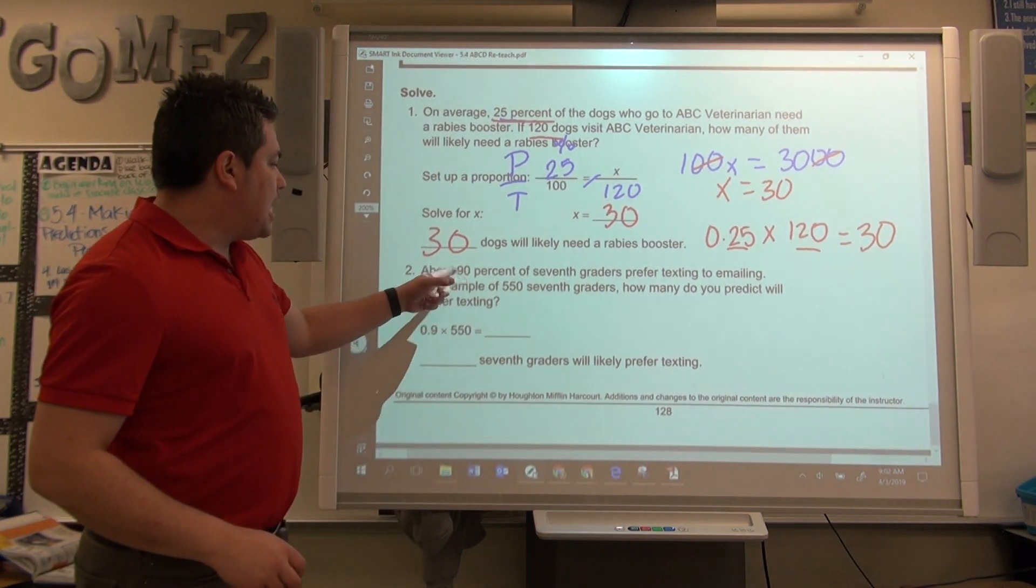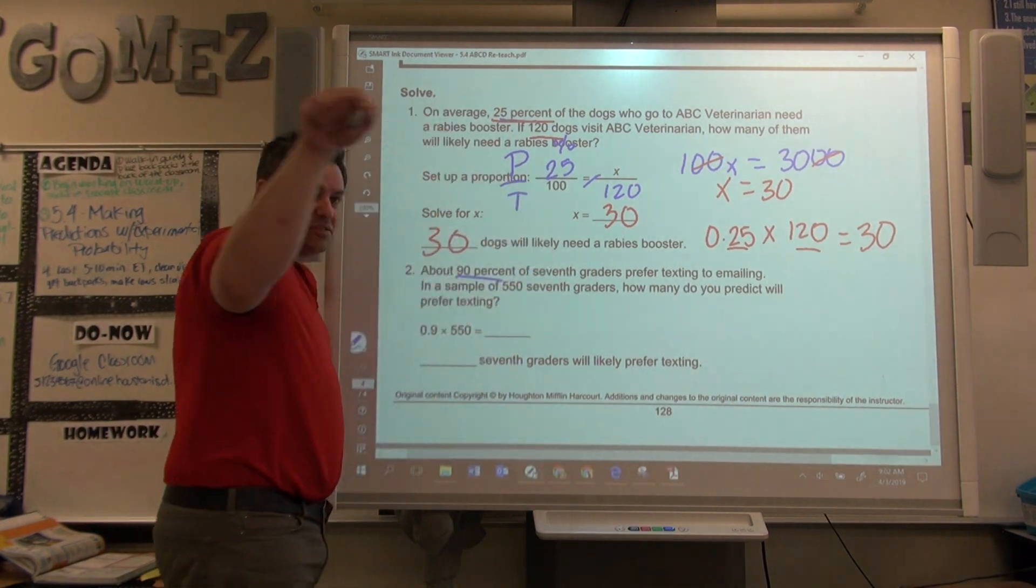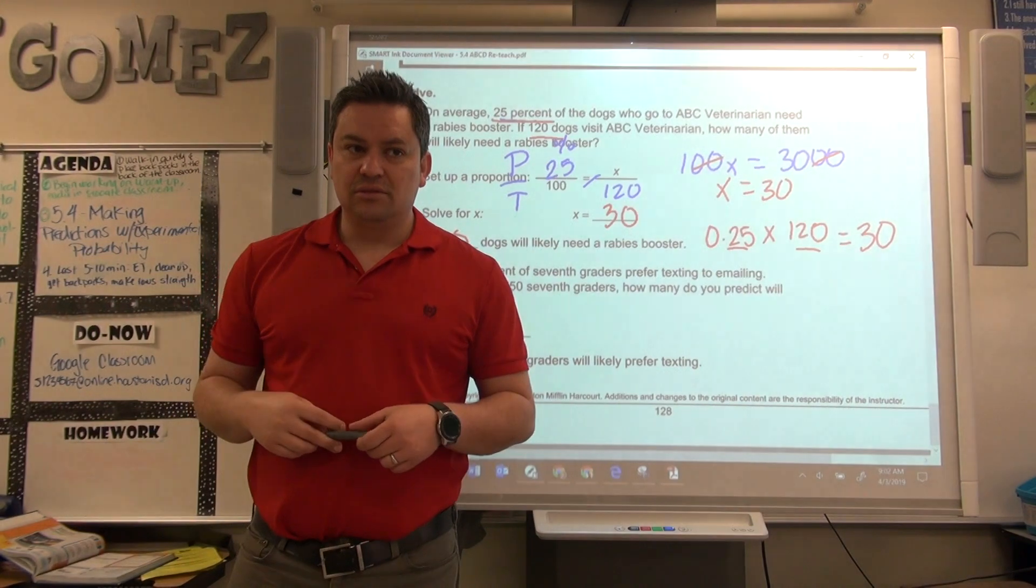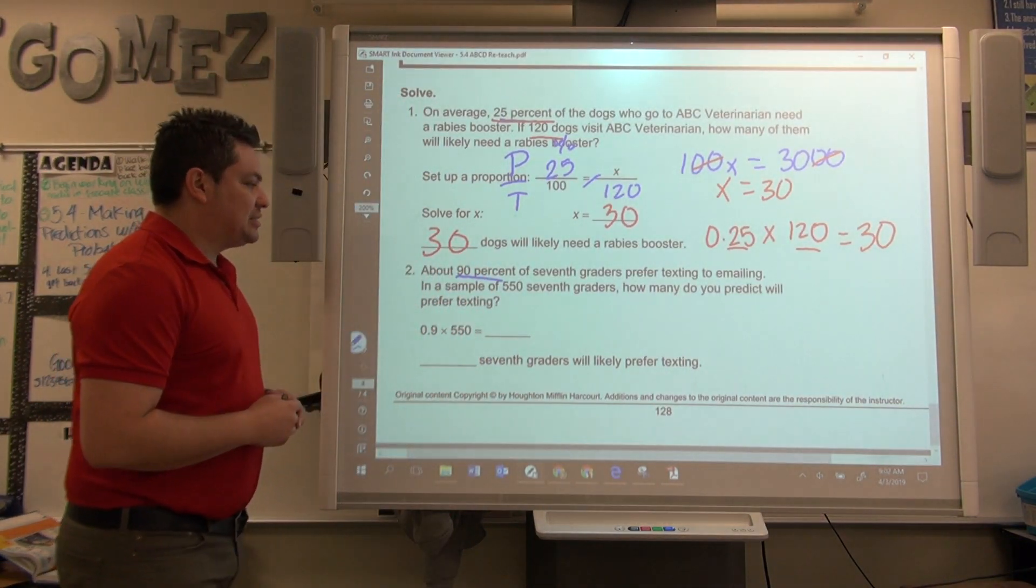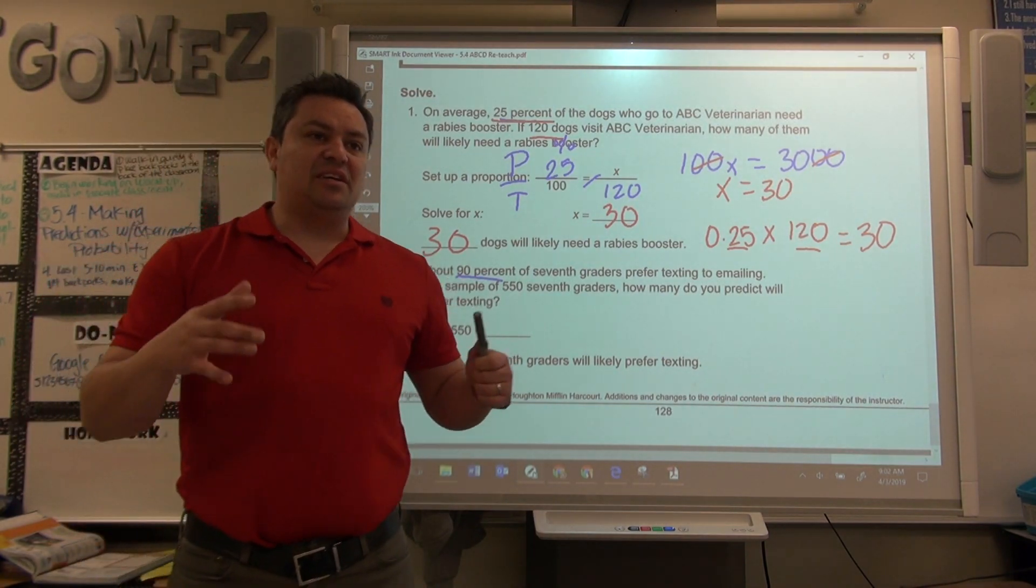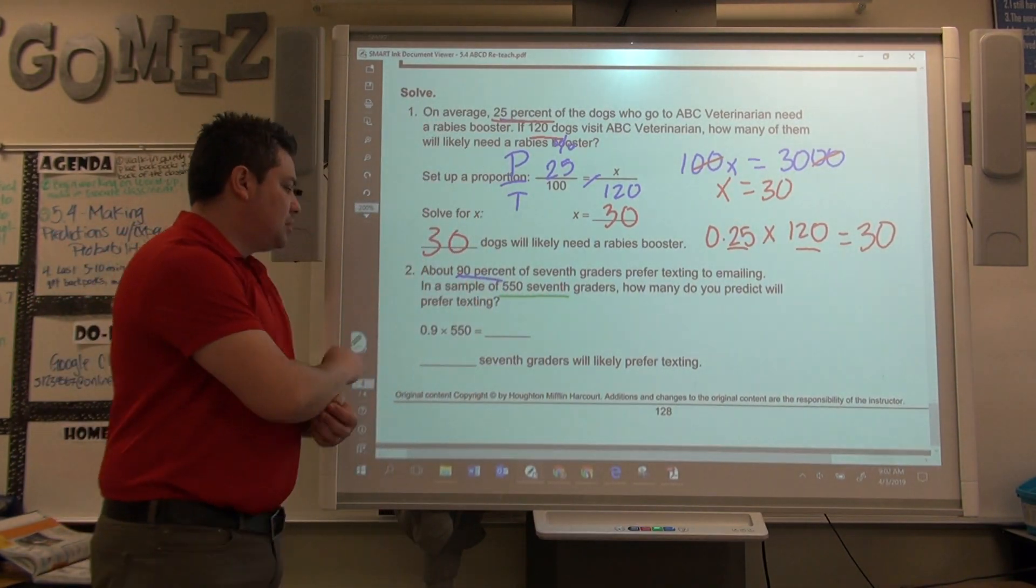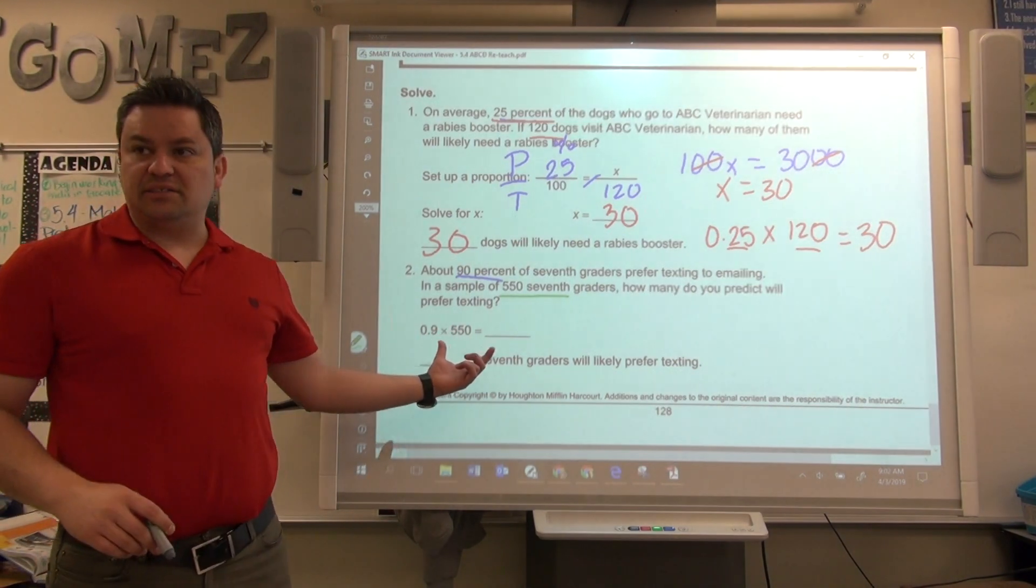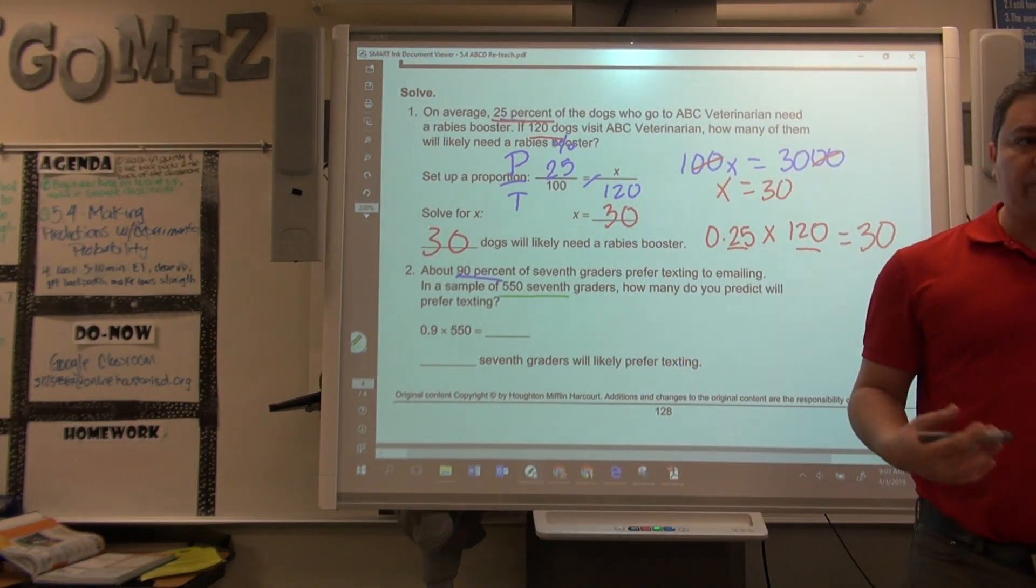Now, second one. About 90% of y'all, seventh graders, prefer texting to emailing. It's kind of true, right? Y'all don't like email, so you just text, whatever. In a sample of 550 seventh graders, how many would you predict that prefer texting? And this one is given to you as a multiply. And I'm also going to show you the cross products way so that you can see the both of them are going to give you the same answer.